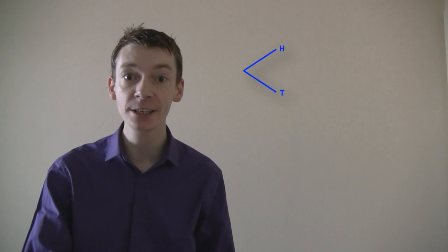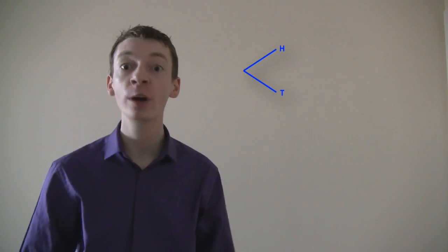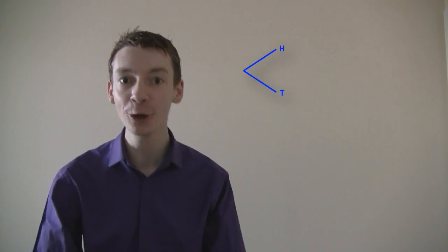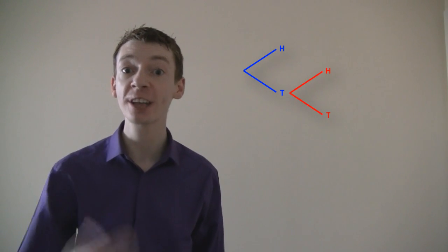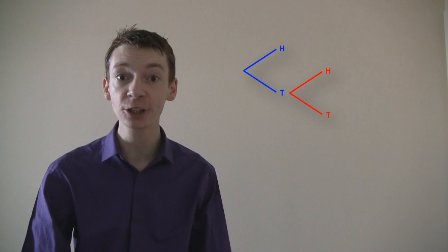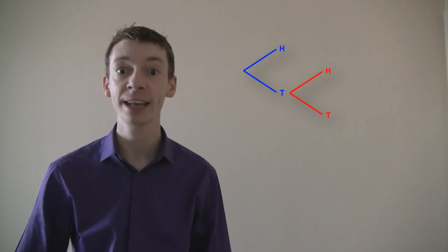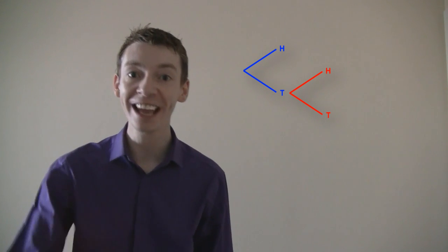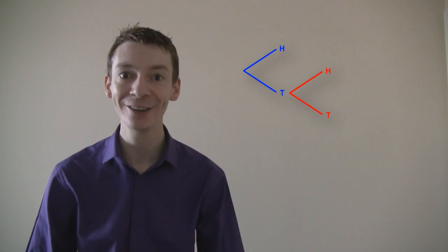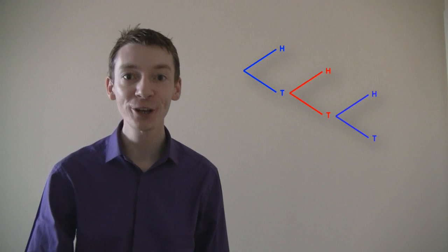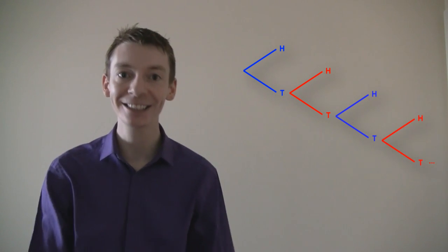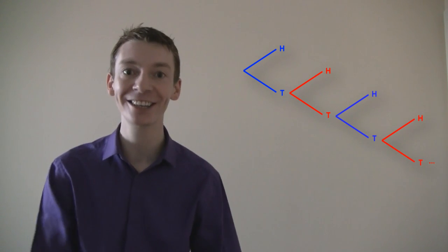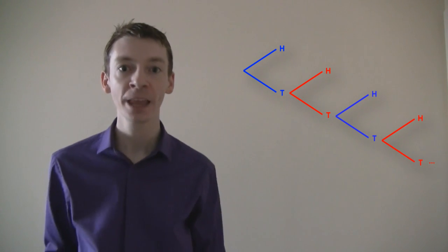So let's draw a tree diagram of what's happening. On the first trial, it's Ant's turn — either he gets heads and he wins, or he gets tails and he loses. Then it's Dec's turn on the second trial — either he gets heads and he wins, or he gets tails and he loses. The third trial is Ant's turn, then Dec's, then Ant's, and that goes on forever.